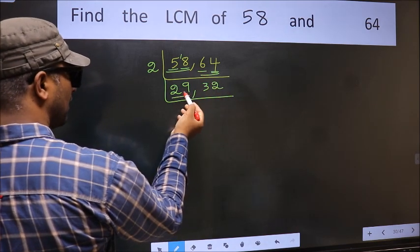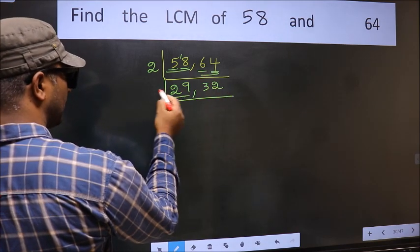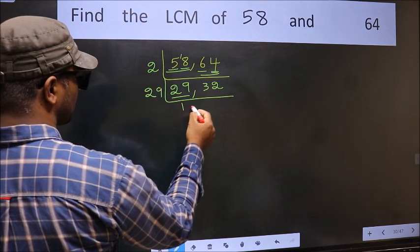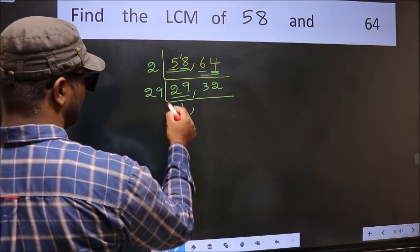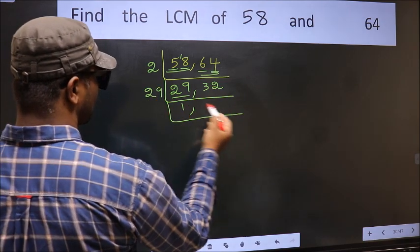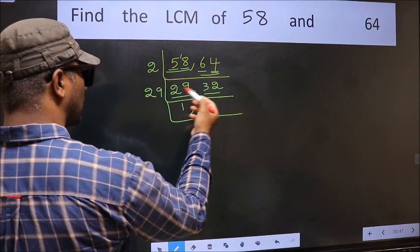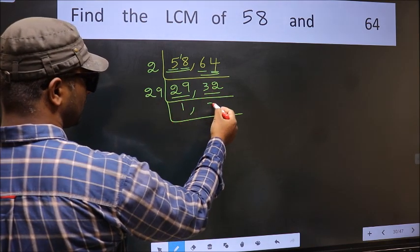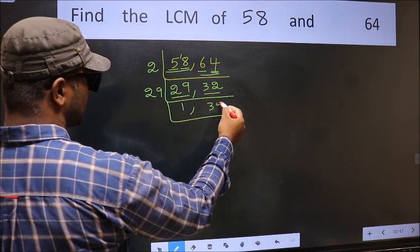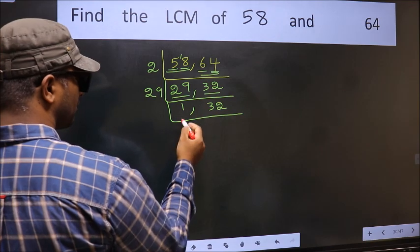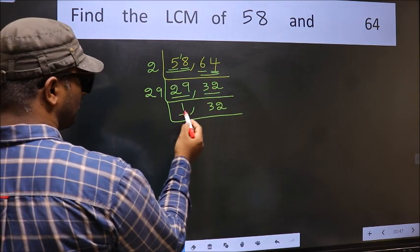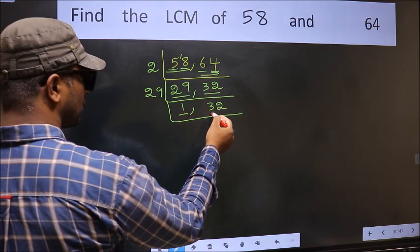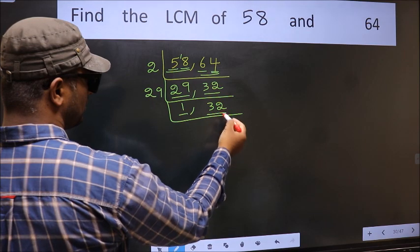Now here we have 29. 29 is a prime number, so 29 once is 29. The other number is 32, which is not divisible by 29, so we write it down as it is. Now we got 1 here, so focus on the other number, 32.